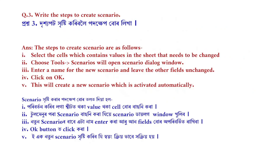Question number 3: Write the steps to create a scenario. The steps to create a scenario are as follows: (i) Select the cells which contain values in the sheet that need to be changed. (ii) Choose Tools > Scenarios — the Scenario dialog box will open. (iii) Enter a name for the new scenario and leave the other fields unchanged. (iv) Click OK. (v) This will create a new scenario which is activated automatically.